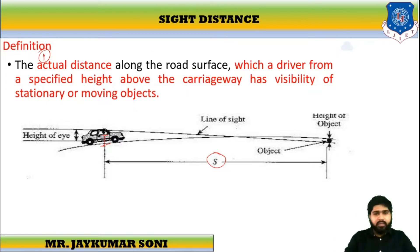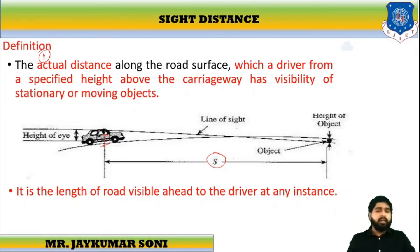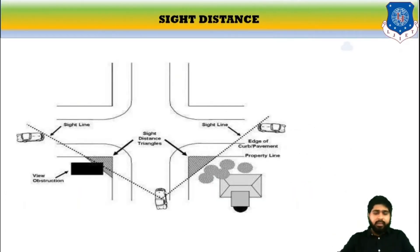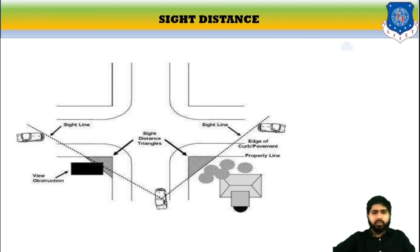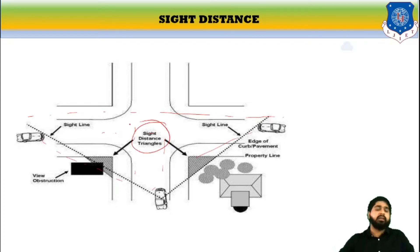So this is the basic understanding of sight distance. It is the length of the road, or the distance of the road, which is visible ahead to the driver at any instance. Whenever we are traveling on a crossroad, if we are traveling in this car, we must have the visibility of objects on either side. If we are unable to view them, there are chances of collision or accident. There must be some sight distance, and this area is called the sight distance triangle.